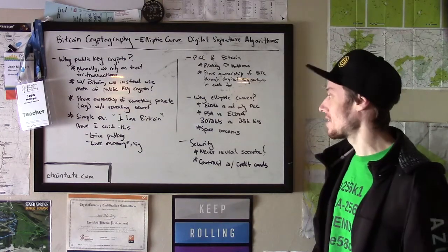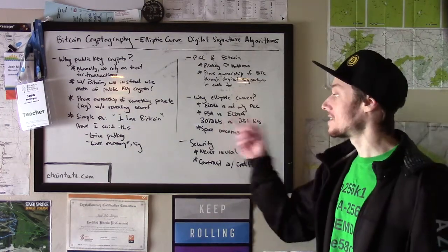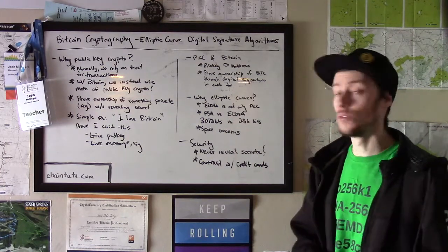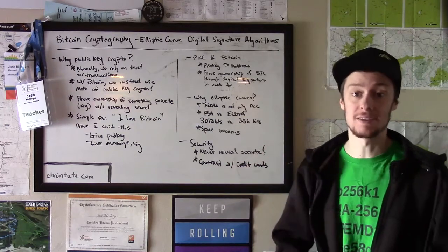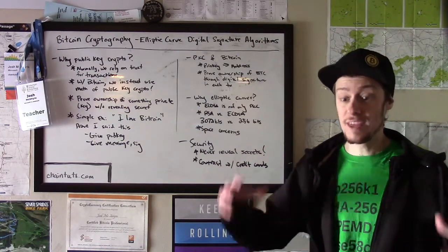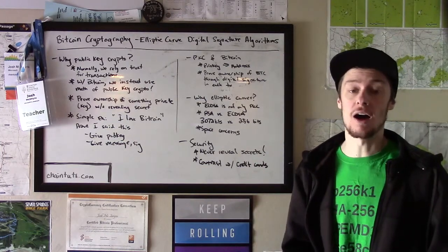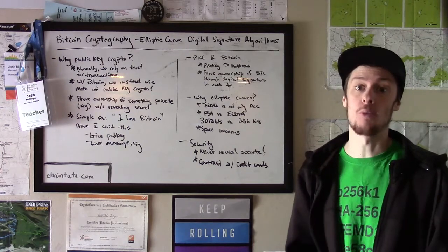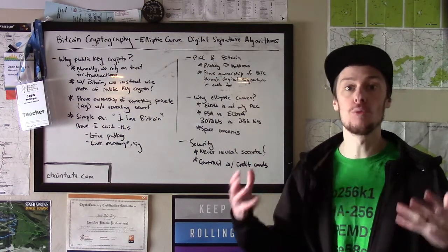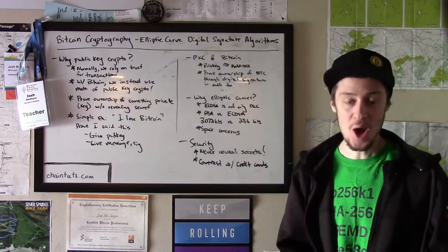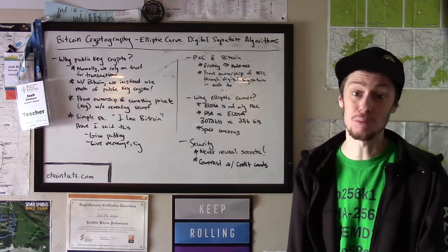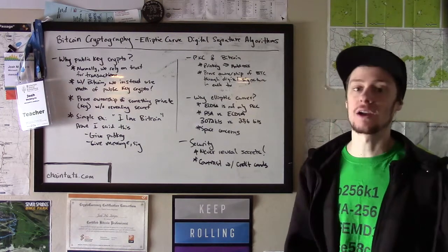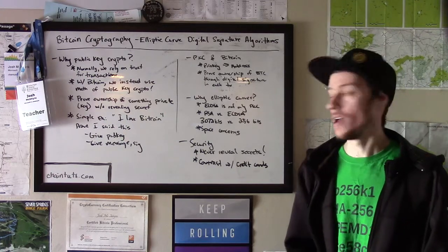So for every digital signature, instead of having to include a 6000-some bit public key along with the signature data, you only have to include a 512-bit public key along with the signature data. This dramatic reduction in size of the signature data really adds up over time when we're talking about a global monetary system where thousands of transactions are being added to the blockchain each day.